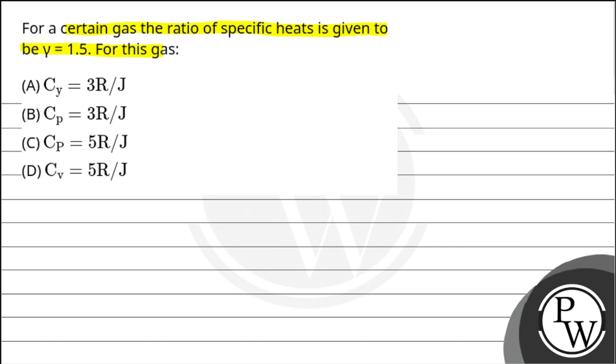Option A: Cv equals to 3R by J. Option B: Cp equals to 3R by J. Option C: Cp equals to 5R by J. Option D: Cv equals to 5R by J.